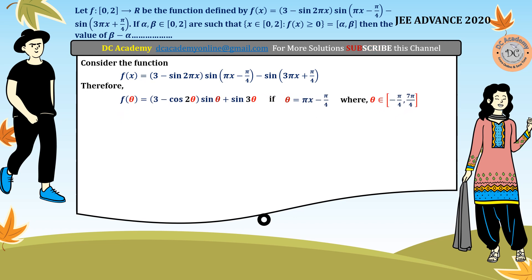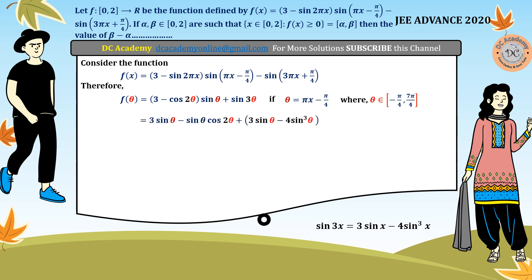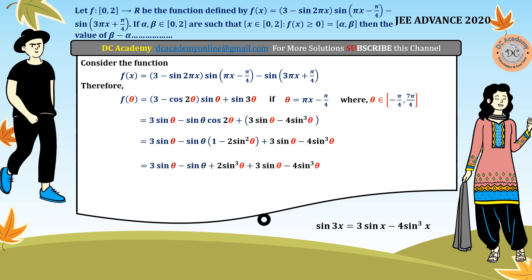To simplify, we convert everything into sine functions. We use the identity sin(3*theta) = 3*sin(theta) - 4*sin³(theta) and replace cos(2*theta) with 1 - 2*sin²(theta). Multiplying through by sin(theta) in the middle term and combining, the function reduces to sin(theta) multiplied by (5 - 2*sin²(theta)).